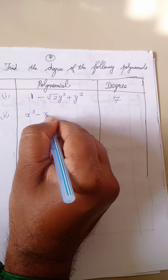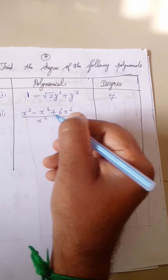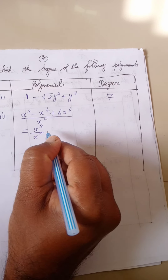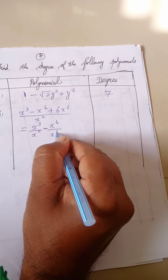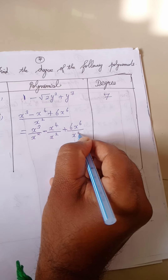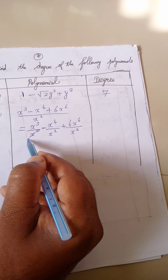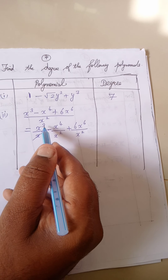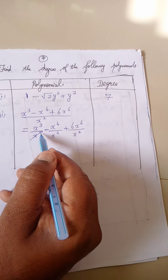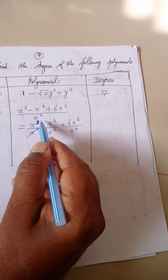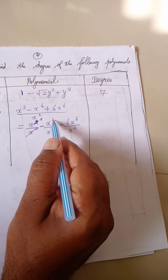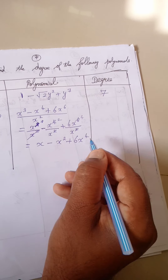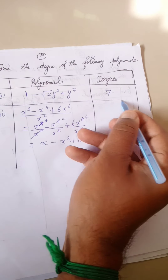Second one: x cube minus x power 4 plus 6 x power 6, all divided by x square. We solve by dividing each term: x cube by x square gives x power 1; x power 4 by x square gives x square (power 2); 6 x power 6 by x square gives 6 x power 4. So the expression simplifies to x minus x square plus 6 x power 4. The degree is 4.